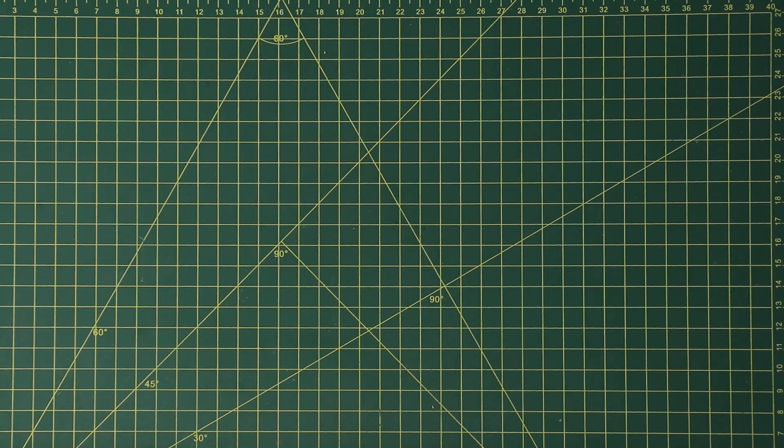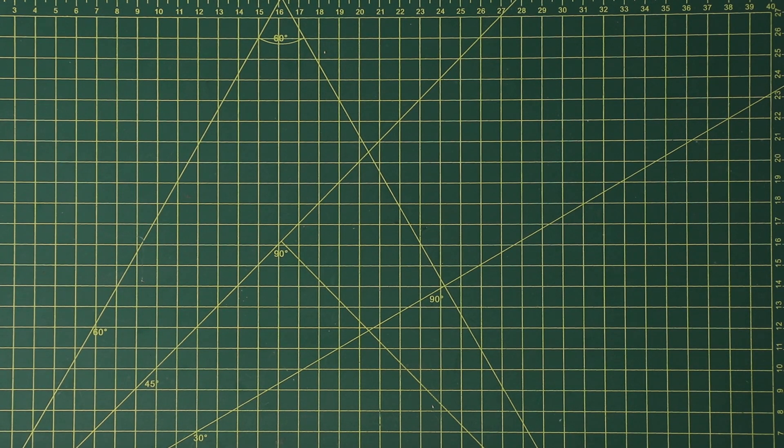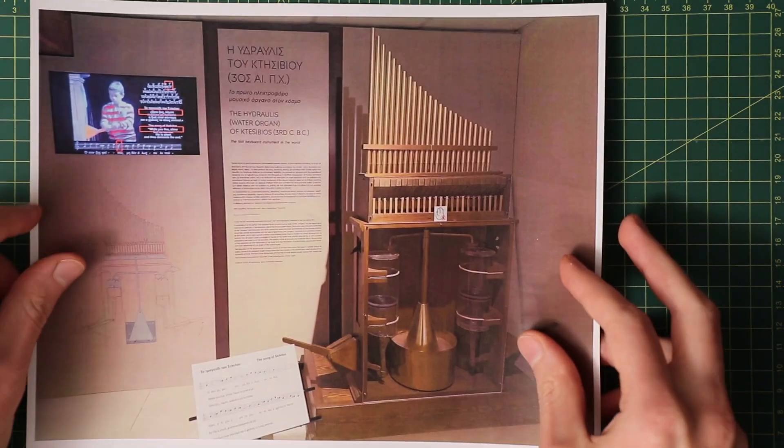Alright, so let's go over some history. The first keyboard instruments date back to before the 3rd century and are based around the pipe organ design.